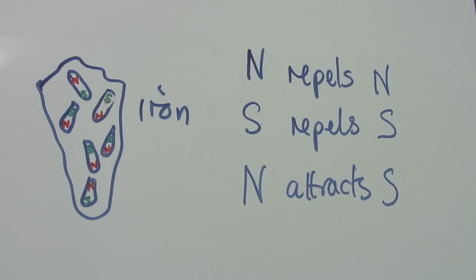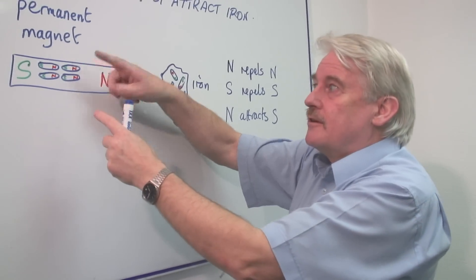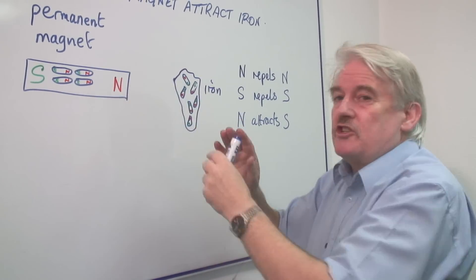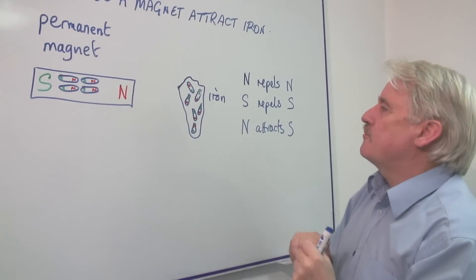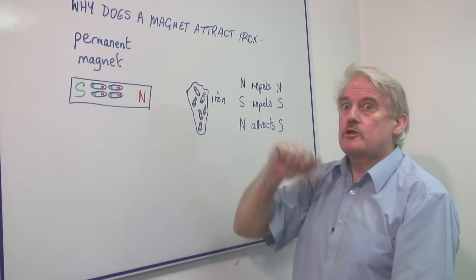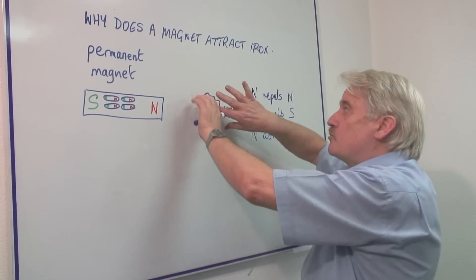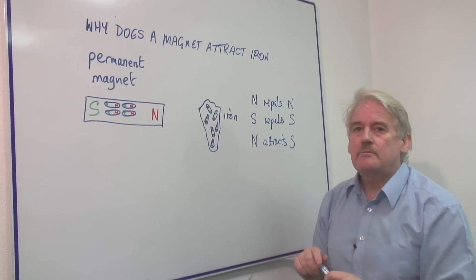If there were an electromagnet, maybe when we switch it on and make our north-south magnet, this would line up and be attracted. But when we switch this off, the magnetism disappears and these would go back, maybe, to their alignment.